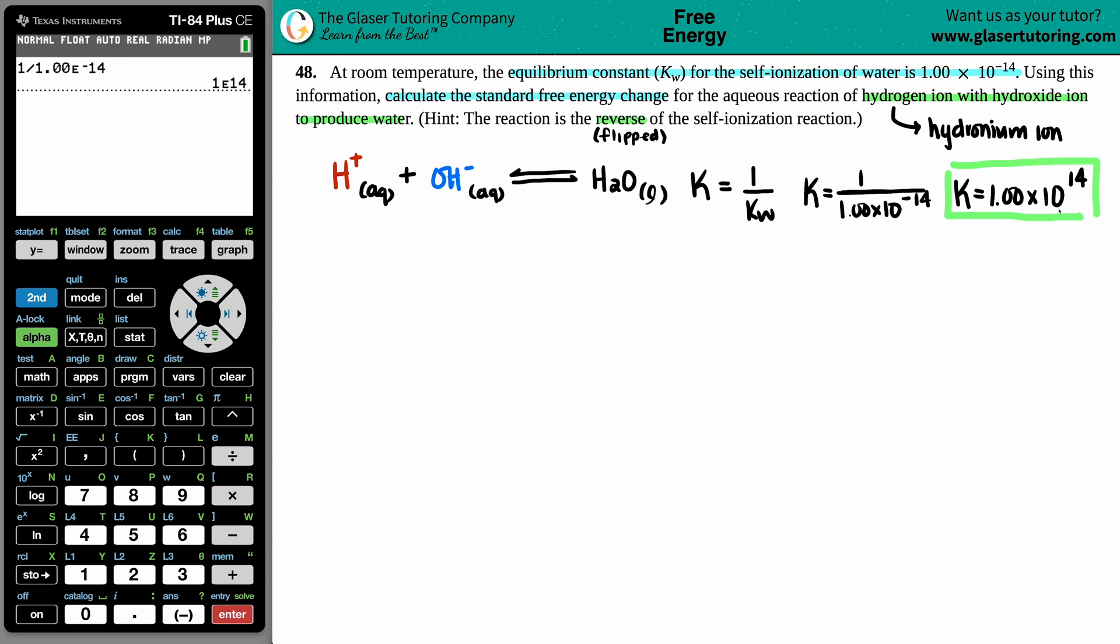So now we have our K value and we want to calculate the standard free energy change for that reaction. Well, standard free energy, free energy, we're talking about Gibbs free energy. So we're solving for a Delta G. What's the formula between a Delta G and a K value? Well, that's this right here. Delta G equals negative RT times LN of K. And the K value is what we just solved for 1.00 times 10 to the negative 14th.